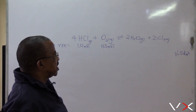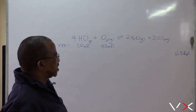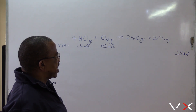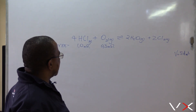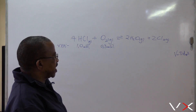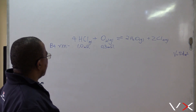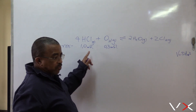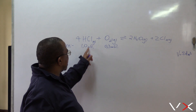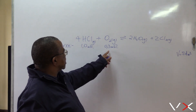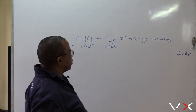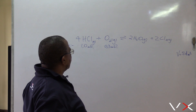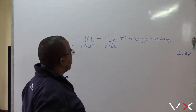Calculate the equilibrium constant Kc at this temperature — 9 marks. Before the reaction, we had 1 mole of HCl and 0.3 moles of O2.